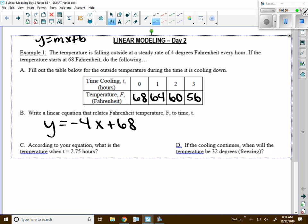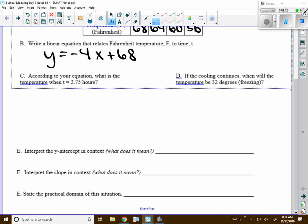Part C. According to your equation, what is the temperature when t equals 2.75 hours? How can we solve that? When t is x. So I'm going to plug in 2.75 for x. I really should have written t here for my x.